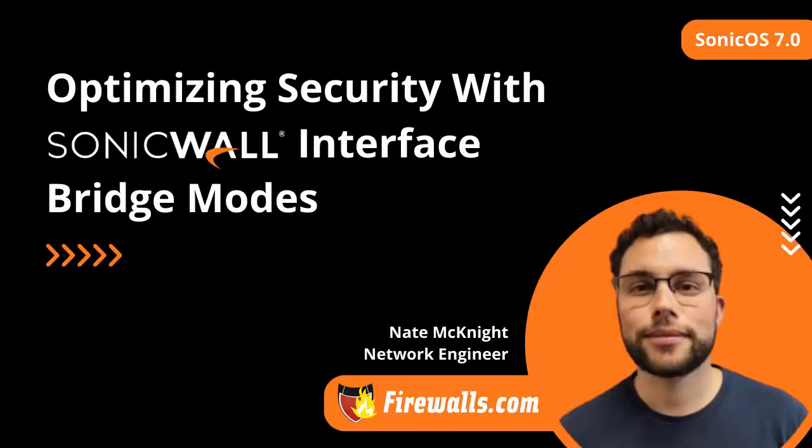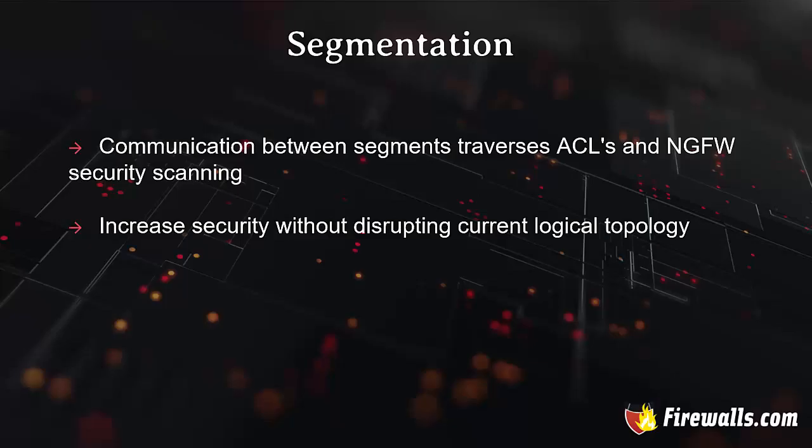Welcome to firewalls.com's video series on SonicWall Gen 7 The Basics. I'm Nate McKnight with Pro Services. In this video we're going to discuss how to optimize security with SonicWall interface bridge modes. Interface bridging allows us to create segments between our networks. We're still within the same broadcast domain, but now we're forcing all traffic between these segments to traverse the access control lists and next generation firewall security scanning. It also enables us to increase security without disrupting the current logical topology.